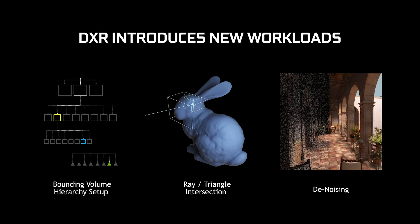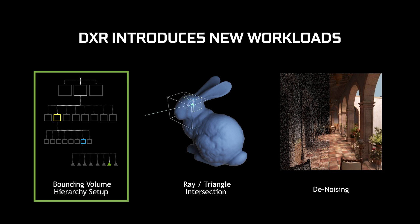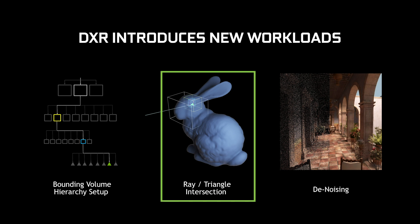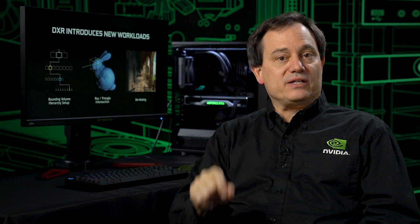Ray tracing introduces some new technologies to the graphics pipeline. These are some of the fundamental techniques and building blocks that make ray tracing possible. A BVH is an acceleration structure — a data structure that makes it possible to do high performance ray tracing into a scene in real time. Ray triangle intersection is pretty much exactly like it sounds: you shoot a ray into a scene, decide whether or not it intersects with geometry and triangles, and then determine what happens — does it reflect, does it terminate, is it blocked or occluded by things between it and the light source? That lets you do things like reflections, shadows, and things of that nature.